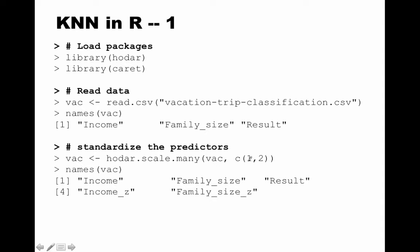We pass 'vac', the name of our data frame, and columns one and two as the columns to standardize. Once you do that, you see that two additional columns have been added to the data frame: income_z and family_size_z. Those are the normalized values of income and family size.